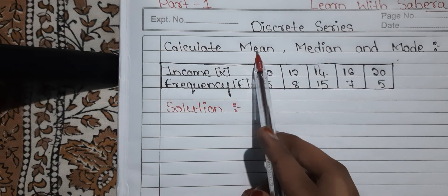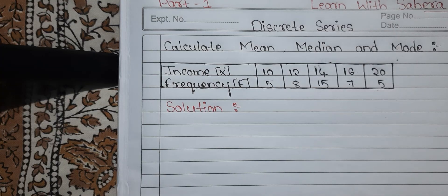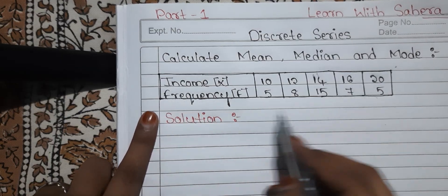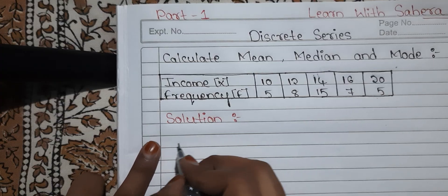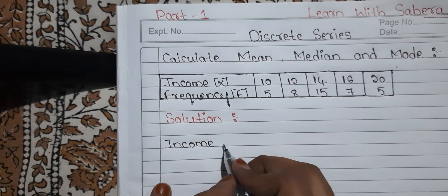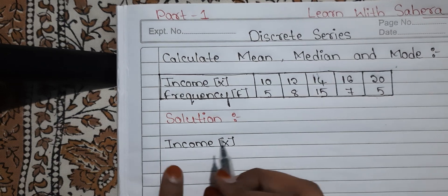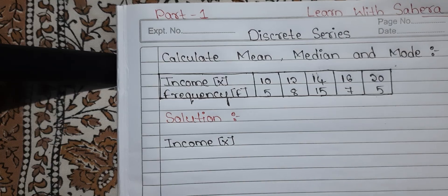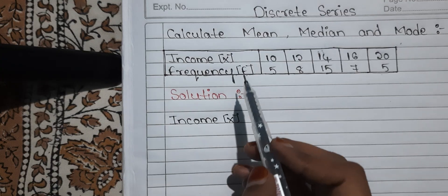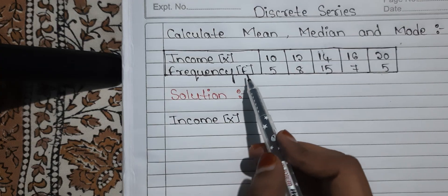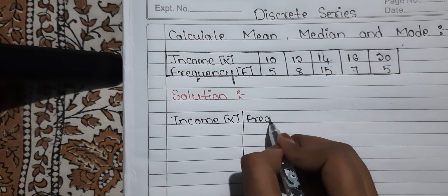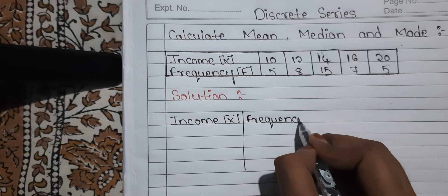First we will calculate mean, then median, and last we will see mode. To calculate mean, first we have to take income and frequencies — whatever they have given in the question, you put in your answer also. Income is denoted as X. If they don't give X in the question, you should assume income as X. If they give X and F, that is fine. If they don't, assume income as X and the other one as F. Draw a box — second column is frequency, denoted as F.